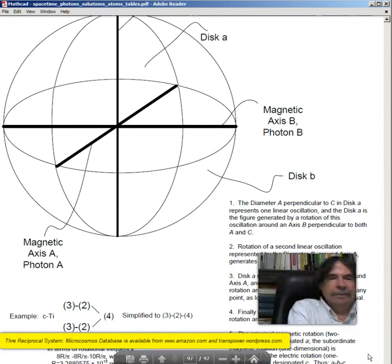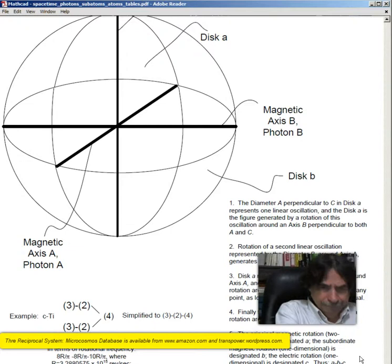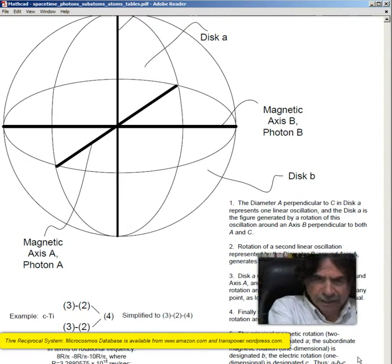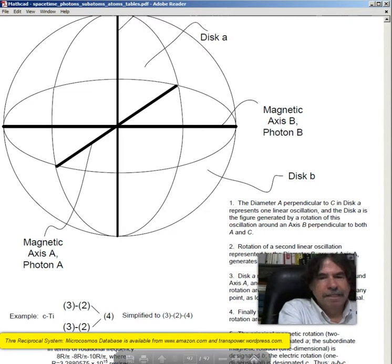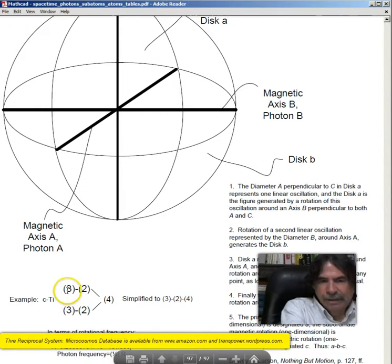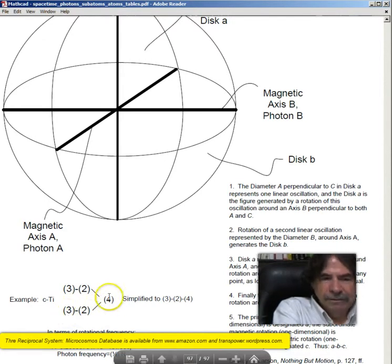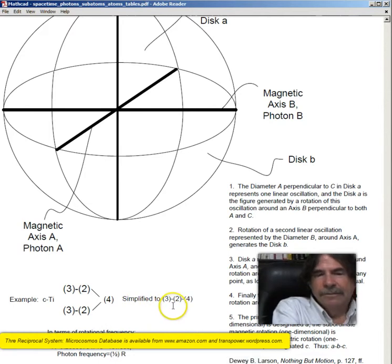The principle of magnetic rotation, which is two-dimensional, is designated A. The subordinate magnetic rotation, which is one-dimensional, is designated B. And the electric rotation, one-dimensional, also is designated C. Now, for cosmic titanium, we have parenthesis 3, hyphen parenthesis 2, and then parenthesis 4. Same thing for the second rotation. So we can simplify this to simply be parenthesis 3, hyphen parenthesis 2, hyphen parenthesis 4.